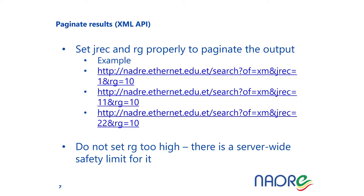To know more about all the parameters that Invenio provides, you can use the link in the slide. By setting the JREC and RG parameters properly, you can implement pagination of the results returned by the repository. For example, three queries are shown: the first returns records 1–10, setting JREC to 11 returns records from the 11th, and from the 21st onwards for the next page. Note it is mandatory not to set the RG parameter too high due to a server-wide safety limit.